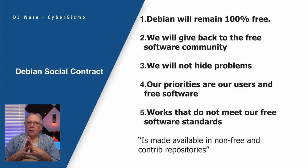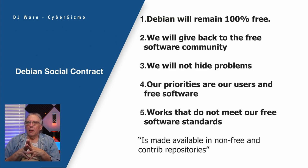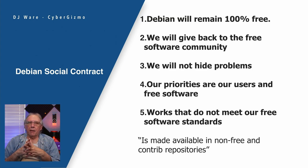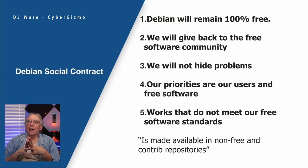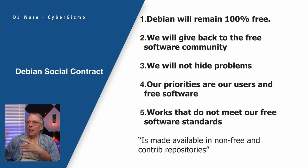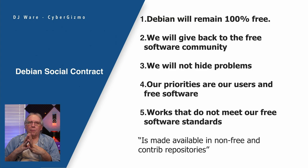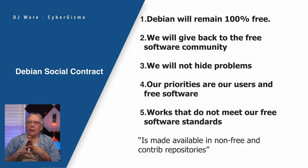Debian was early on one of the pioneers that helped shape what free and open source software actually meant. They started out with the Debian social contract, and there were five points to it. First, Debian will remain 100% free — free to use. Second, they will give back freely to the software community, meaning because it's open source, they're willing to put any changes they make back into the community pool.